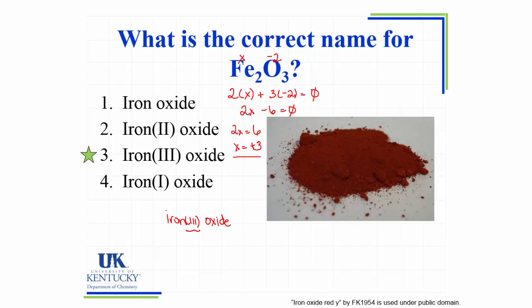Iron(II) oxide would have the formula FeO. If iron is 2+ and oxygen is 2−, the crisscross method gives Fe2O2, but since ionic compounds depend on the ratio of cations to anions, we simplify that to FeO.